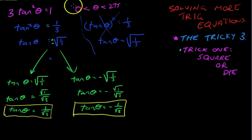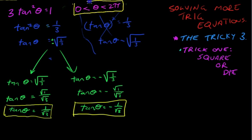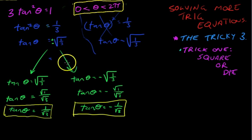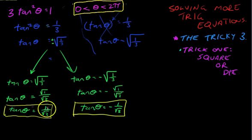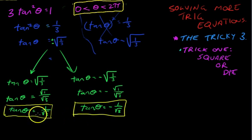Now, I really should have stated the domain at the start — we've got the classic three tan squared theta equals one, and we're going between zero and two pi. The problem is that it splits similarly to when you solve a quadratic. We've got these two things — tan theta equals one on root three, and tan theta equals negative one on root three — and we just need to solve these independently.